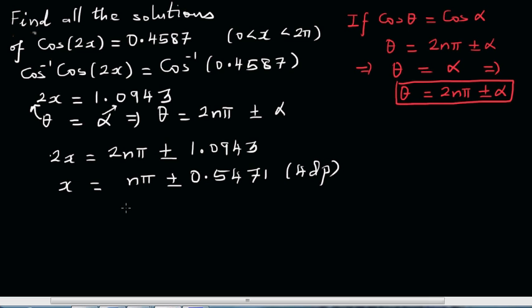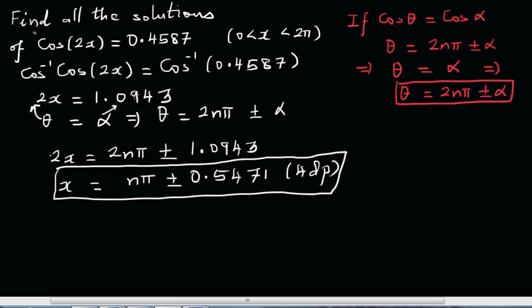We're almost there. This is the general solution. Now we want to write all the solutions between 0 and 2π. If you want to write this as a decimal, x is between 0 and 2π which is 6.28. We want to find all the solutions between 0 and 6.28. Let's start with n equals 0.